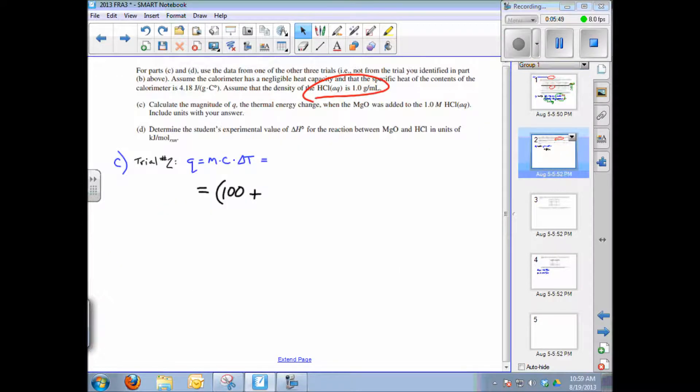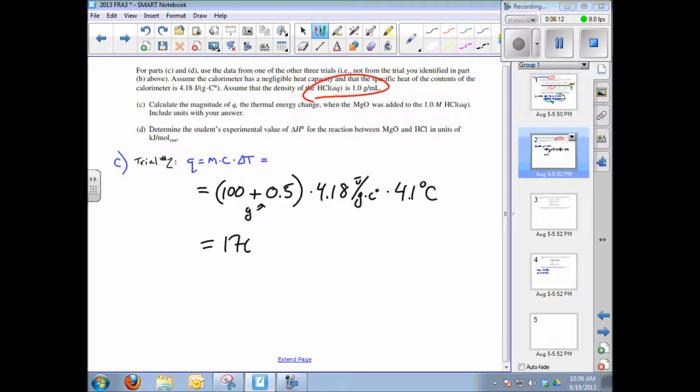We have to include that as total mass times C, which is 4.18 joules per gram degree Celsius, times the delta T. The delta T for that one was 4.1 degrees Celsius. So the value is 1700 joules or 1.7 kilojoules.